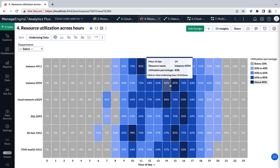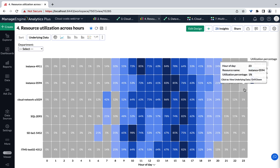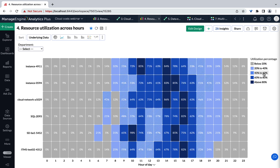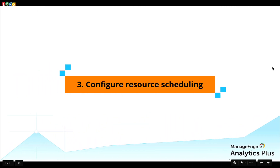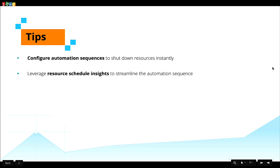This visualization analyzes various compute metrics like CPU and RAM utilization and displays each department's resource utilization behavior. It offers immense granularity by tracking utilization on an hourly basis and aids administrators in uncovering usage trends effortlessly. Understanding these nuanced differences in utilization patterns goes a long way in strategizing an effective resource schedule. Organizations can then configure automation sequences that instantly shut down resources based on the curated schedule and effectively curb cloud wastage.